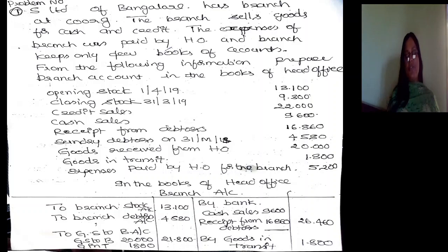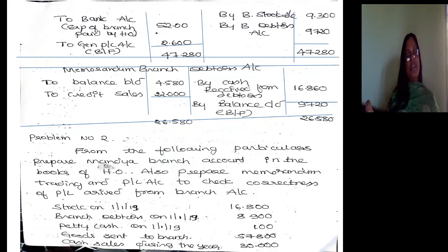For expenses paid by head office for the branch: in the books of head office, the journal entry is Branch Account Dr. to Bank Account — for the amount of expenses paid by head office on behalf of the branch.